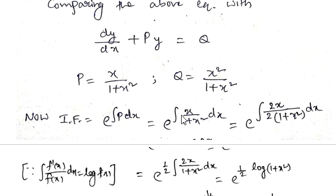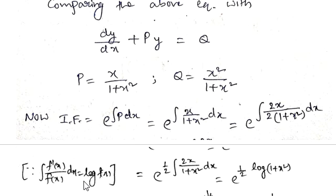We multiply and divide by 2, writing (1/2)·∫(2x / (1 + x²)) dx. The reason is that 2x / (1 + x²) is in the form f'(x) / f(x), and the integration of f'(x)/f(x) dx equals log f(x). To get this form we multiplied and divided by 2. Here, if f(x) = 1 + x², then f'(x) = 2x.